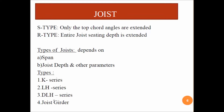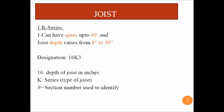For the K series, spans can be up to 60 feet and depth ranges from 8 inches to 30 inches. The designation example shows: '16K3' — where 16 stands for depth of joist in inches, K stands for the series, and 3 stands for the section number used to identify the joist.